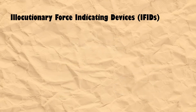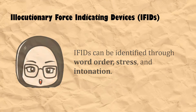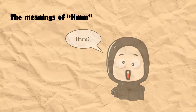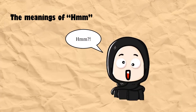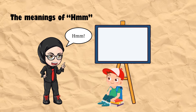Other than performative verbs, IFITs can be identified through word order, stress, and intonation. Look at the illustration of me saying 'hmm.' The first one, when I say 'hmm,' it can mean that I'm confused. When I say 'hmm' to you as you are seated, it can mean I'm asking you to move over — I probably say this 'hmm' as I move my head to the side as a gesture of asking you to move.